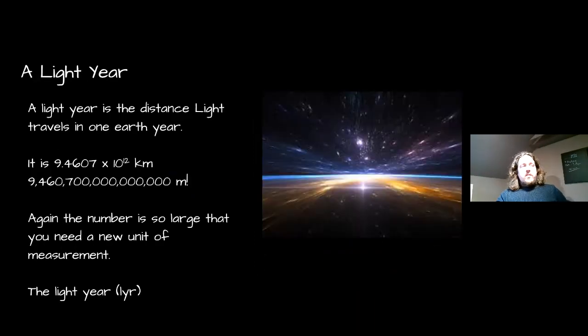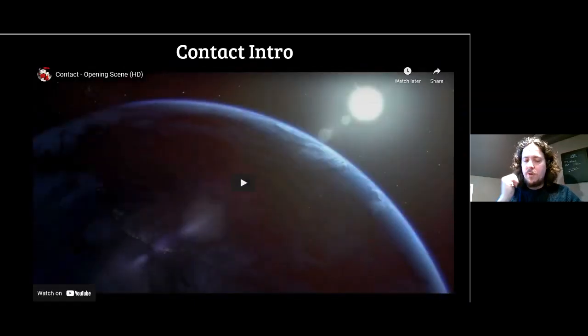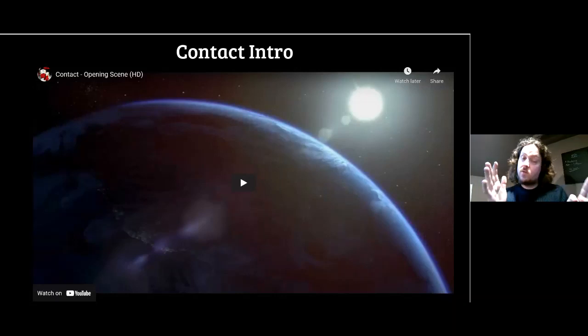A light year is the distance that light travels in a year. Don't be fooled by the fact that it says light year, because it makes you think of time, but it's not time. It's the distance that light travels in a year. It's 9.46 times 10 to the 15 meters, which is a huge number. We use light years to measure distances beyond our solar system.